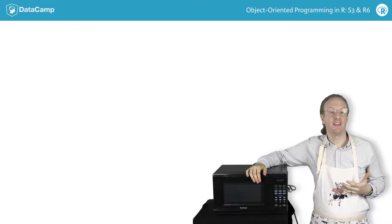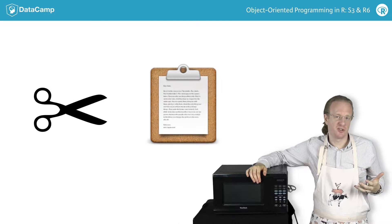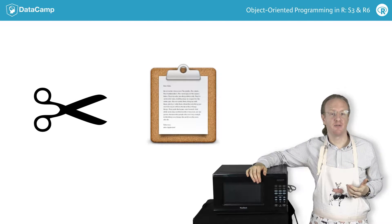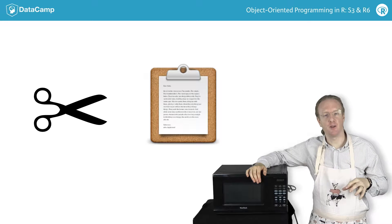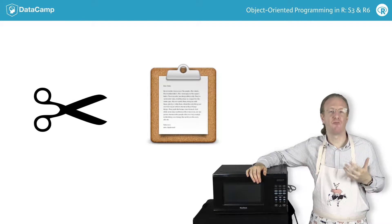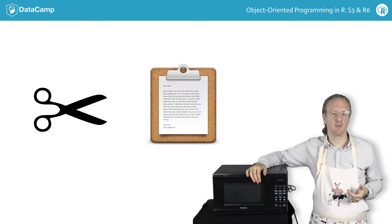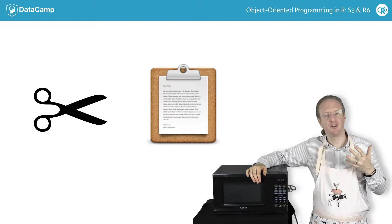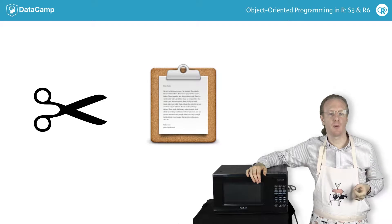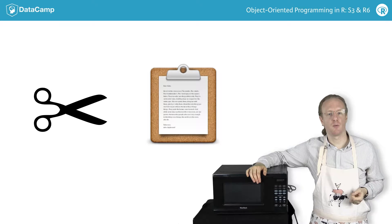If you want to define an R6 class for the fancy microwave, you could just copy and paste the definition from the original microwave and then start adding new features. Unfortunately, copying and pasting is a really big source of bugs and is usually a sign that you're writing bad code. If you change the definition of the original microwave, you really want a way for those changes to be automatically mirrored in the fancy microwave.